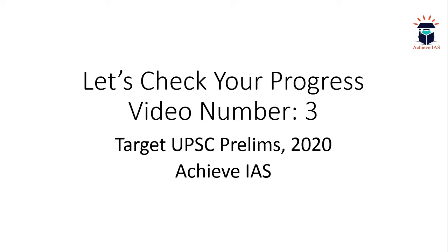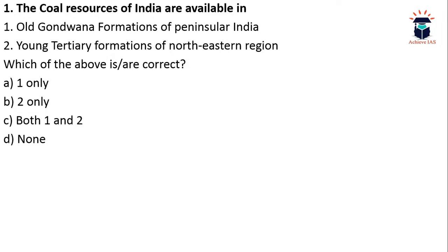Yesterday we covered polity, so today we will be covering geography. First question: coal resources of India are available in — first, all Gondwana formations of peninsular India; second, young tertiary formations of the northeastern region. Which of the above is/are correct? It's an easy question — if you have read the NCERTs you will be able to mark the answer. You can pause the video and think about it.